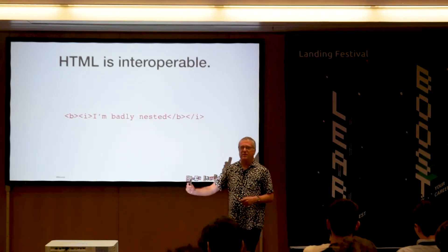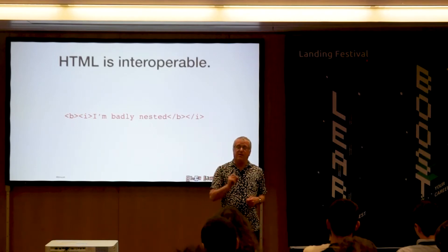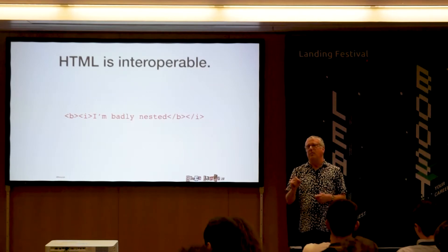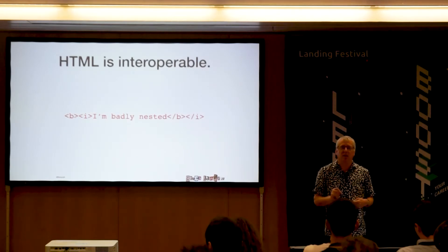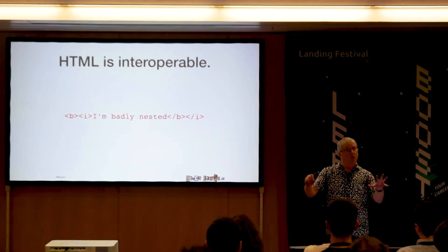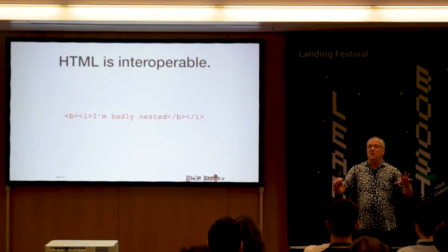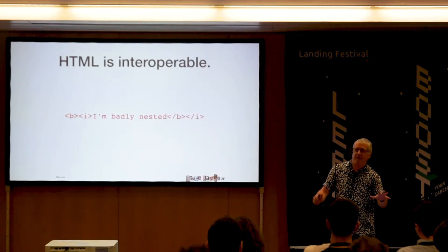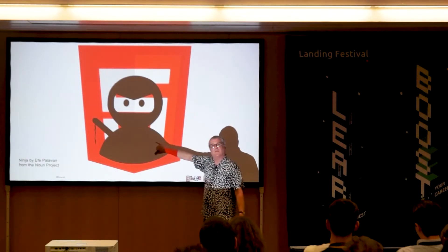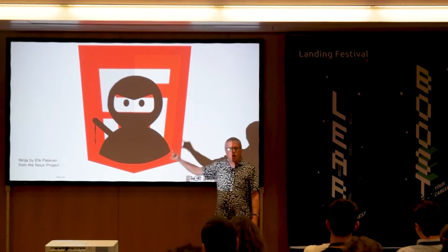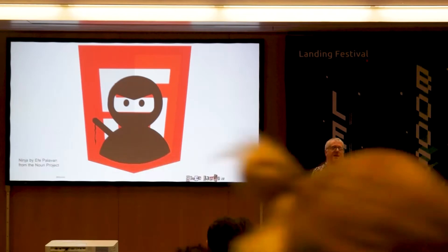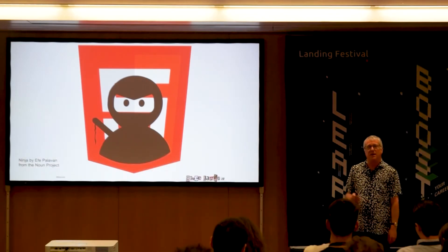HTML5 has what's called the HTML5 parsing algorithm, which guarantees that no matter what combination of bad markup you write, it will produce the same DOM in every browser. It might not be the DOM you want, but at least it will break the same on every browser. This, in my opinion, is an HTML5 ninja — super powerful, but nobody ever notices it. It means that websites now have greater interoperability than ever before.